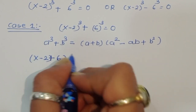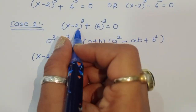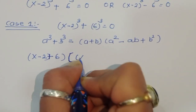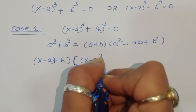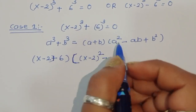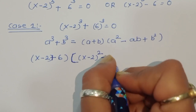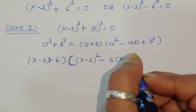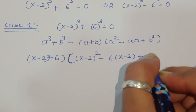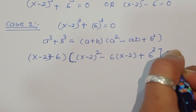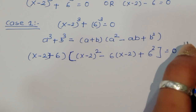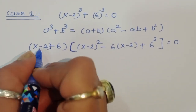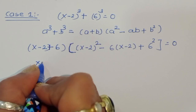Expanding: a² is (x minus 2) whole square, minus ab is minus 6 times (x minus 2), plus b² is 6² which is 36, equals 0. Now x minus 2 plus 6 becomes x plus 4.